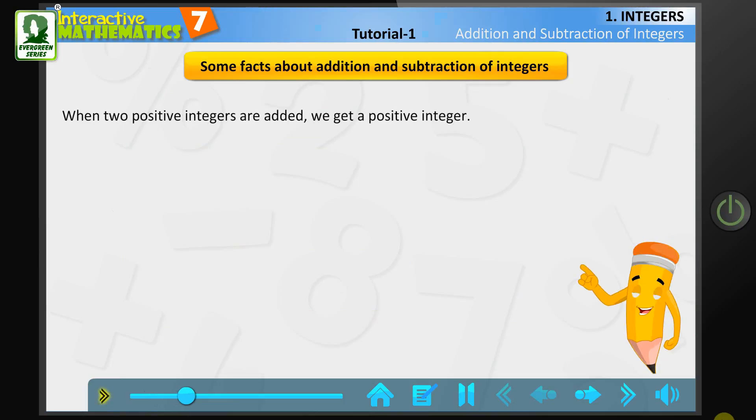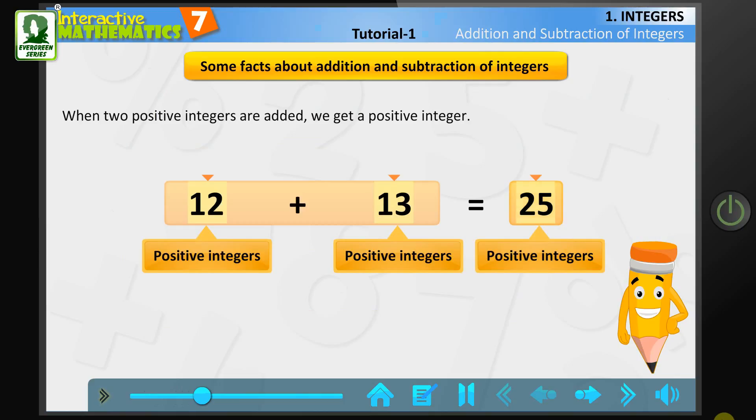When two positive integers are added, we get a positive integer. For example, the sum of 12 and 13 is equal to 25. The sum of two positive integers is a positive integer.